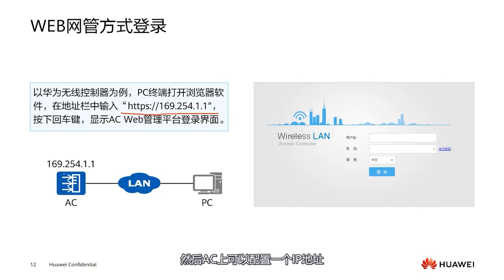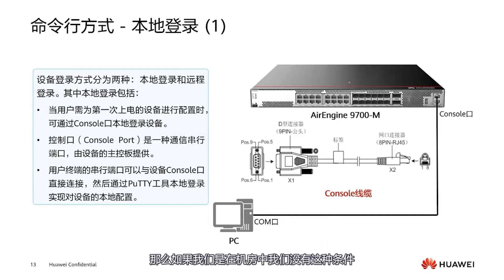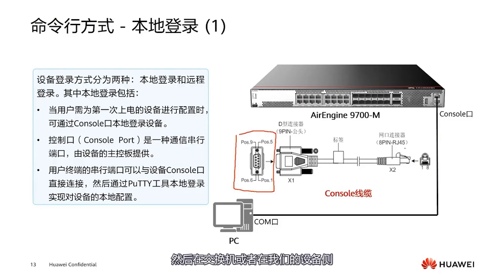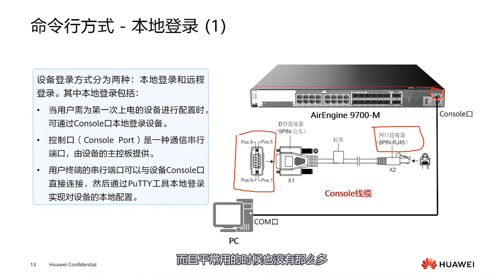If we are in the data center and prefer to log in using the command line, we need to use a console cable. The console cable interface has a total of nine pins. On the switch or device side we use the RJ45 console interface, and on our PC side we use a COM port — the nine-pin interface. Many PCs today do not provide this COM port, so we can use a COM-to-USB adapter cable to connect the COM port to our PC.